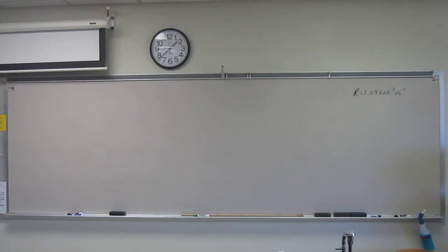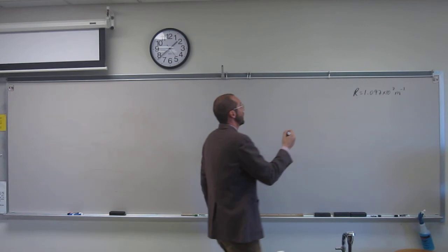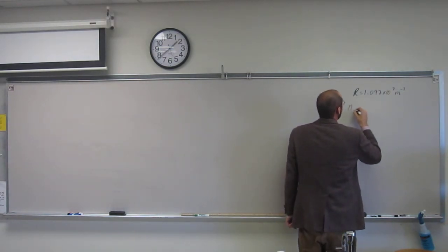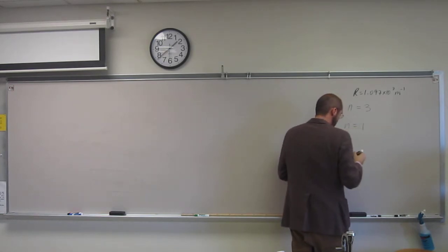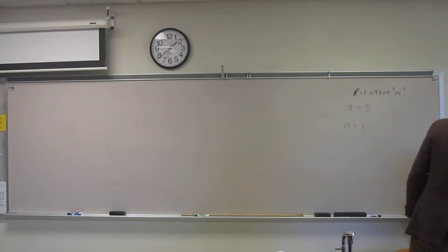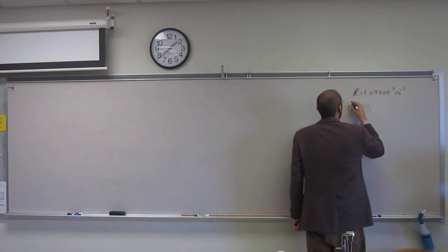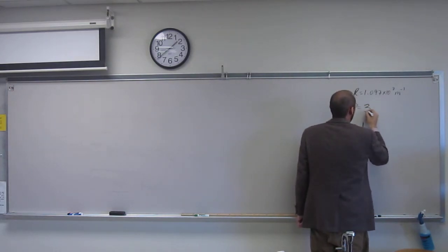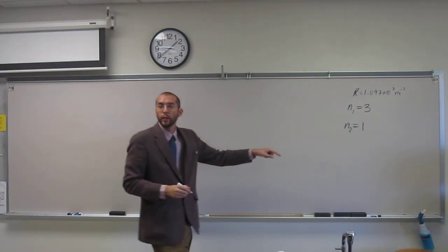So this problem says calculate the wavelength and frequency of light emitted when an electron changes from n equals 3 to n equals 1 in the hydrogen atom. What region of the spectrum is this radiation span? Okay, so n equals 3 to n equals 1.